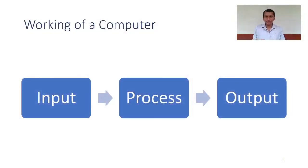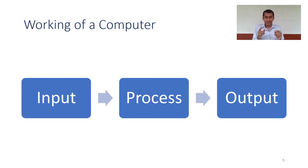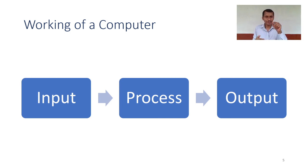Welcome back to microprocessor architecture and 8086 programming. We are back to introduction to instruction format. As we know, a computer works by taking input, processing it, and producing some meaningful output. Processing is very important because otherwise input would have been output — there is nothing new. All this difference comes because of processing, and the processor is going to do that processing.